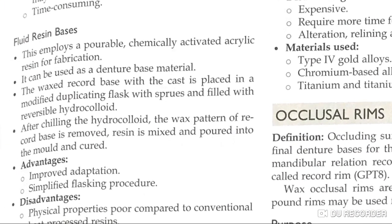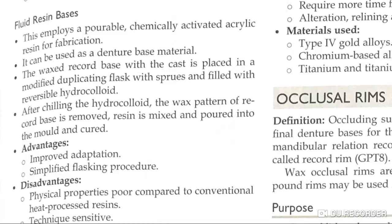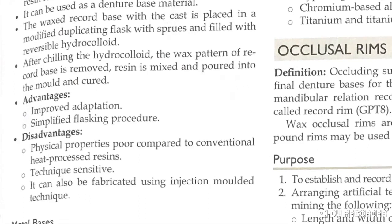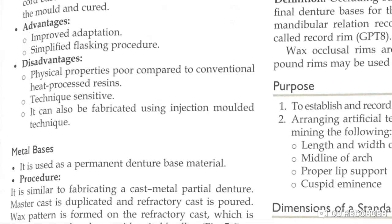For the fluid resin base, the wax record base is placed in a modified duplicating flask with sprues and filled with reversible hydrocolloid. After chilling, the wax pattern is removed, fluid resin is mixed and poured into the mold and cured. The disadvantage is that physical properties are poor compared to conventional heat-processed resin, and the technique is sensitive. It can also be fabricated using an injection-molded technique.